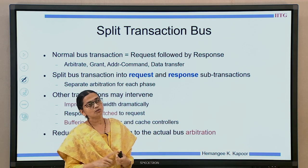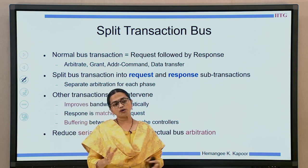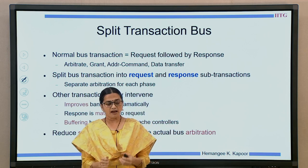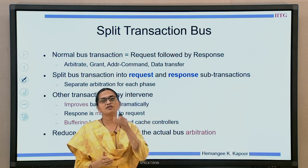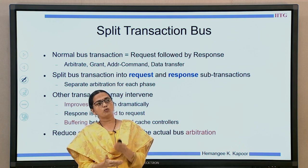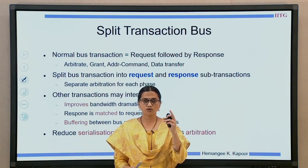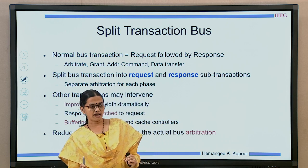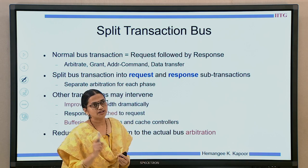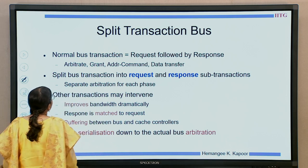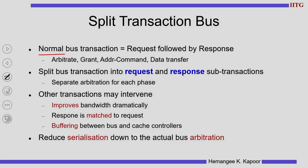You need a lot of buffering. The last question is serialization — what do you say about which write or read happened before which one? We have been saying that the bus serializes the order, and in this split transaction bus, whenever a request is issued that is when we serialize the request. I won't wait for the response, but the request will serialize the bus transactions. So the request and response are separate, bandwidth is improved, requests need matching, extra buffering is needed, and serialization is done when we win the bus during the request phase.